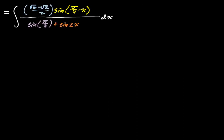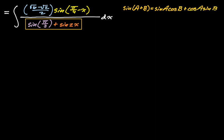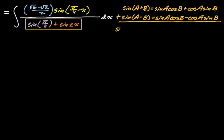I'll copy this over and now deal with the denominator. I have sine of something plus sine of something else — so what formula could I use for that? I'm thinking I can use sine of a plus b and sine of a minus b. Sine of a minus b is sine a cosine b minus cosine a sine b. What I'm going to do is add these formulas together. Sine of a plus b plus sine of a minus b — the cosine a sine b parts cancel out — gives us two sine a cosine b.